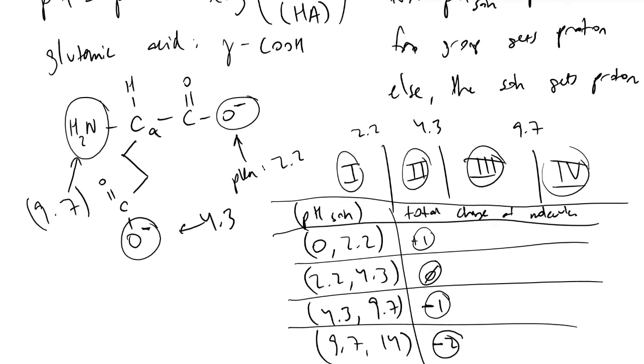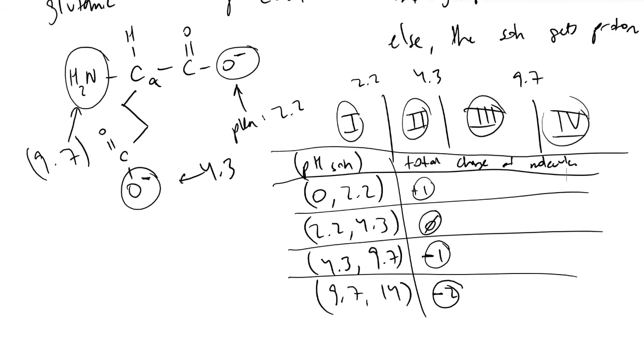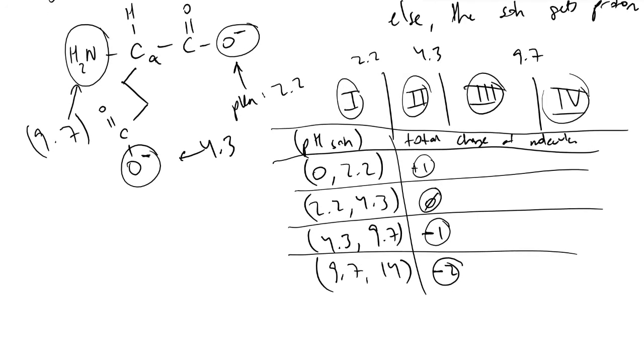Now to actually get back to the Henderson-Hasselbalch equation, what we would find is that if we wanted to know at a pH of 7.2, what is the ratio of the unprotonated form to the protonated form of the alpha carboxy group?